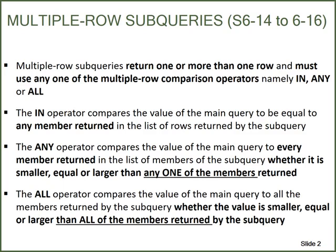Multiple row subqueries return one or more than one row and must use any one of the multiple row comparison operators, namely IN, ANY, or ALL. The IN operator compares the value of the main query to be equal to any member returned in the list of rows returned by the subquery.